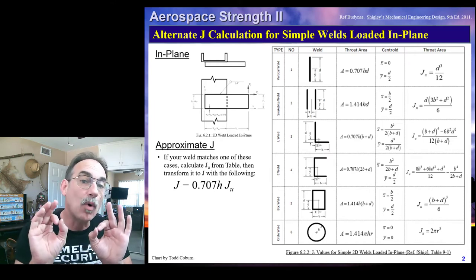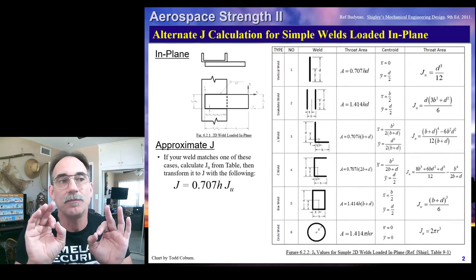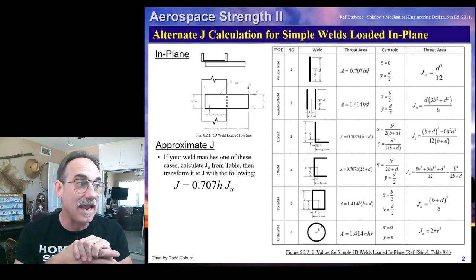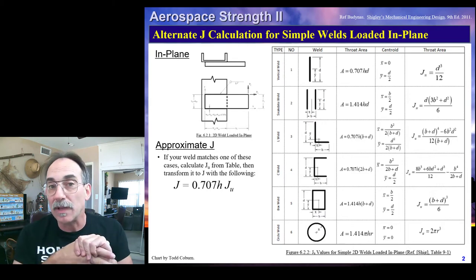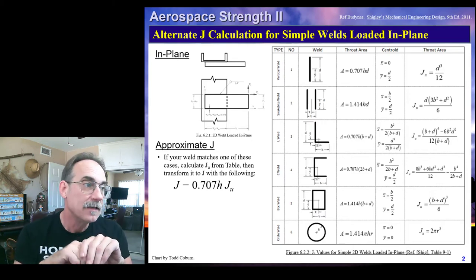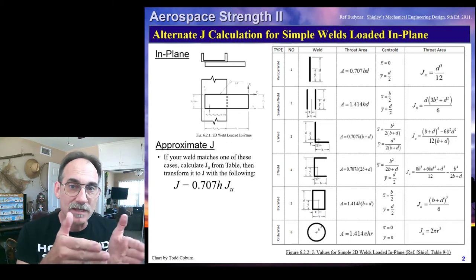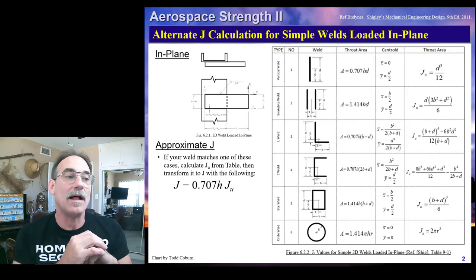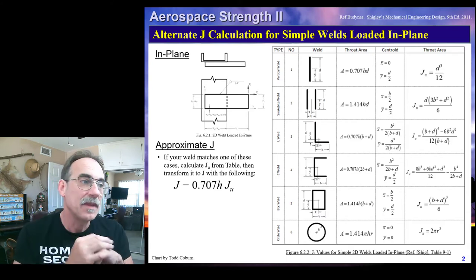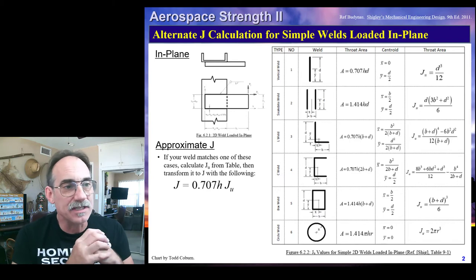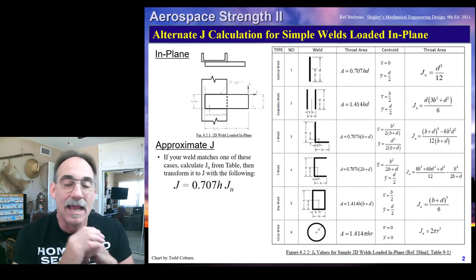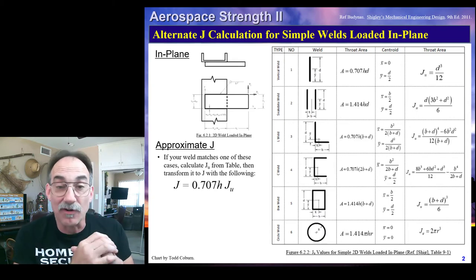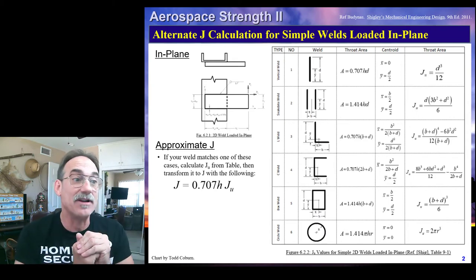You'll see there's a formula for the centroid of the weld pattern, and there's a formula for the torsional resistance J. Actually, it's a portion of the torsional resistance J-U. In order to turn this into the complete torsional resistance J, we're going to need to multiply that by 0.707H. So, J-U from this table times 0.707 times the throat dimension of the weld will give us the approximate torsional resistance of that weld.